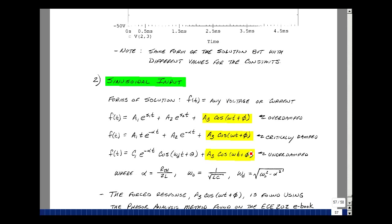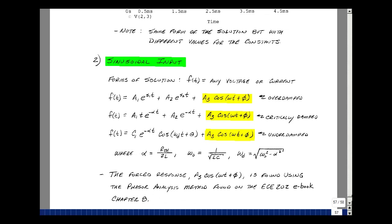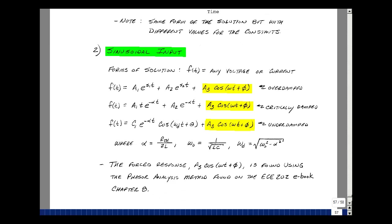The forced response we found with a DC result by treating a capacitance like an open circuit and inductance like a short circuit. We'll take a look at in the beginning of ECE 202 in Chapter 8 is how to find this forced response in what's called a phasor analysis. Once you find that, we can then add that to this result and then solve for the remaining constants.